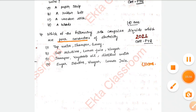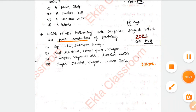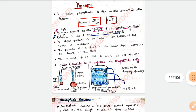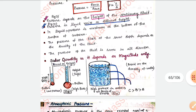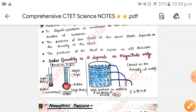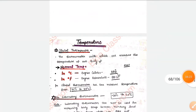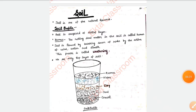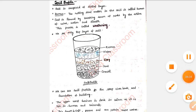I have also given some PYQs which are most important from previous year questions. The topic of Pressure is very important — I have shown some diagrams because this diagram is most important, as this question was asked in a previous CTET exam. Coming to Heat and Temperature, I have covered everything here. So you don't have to worry about anything — just read it, buy it, and crack CTET.